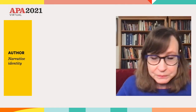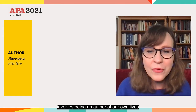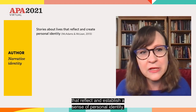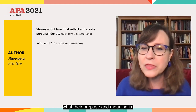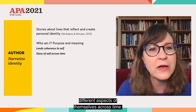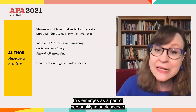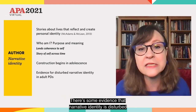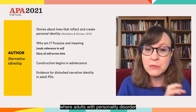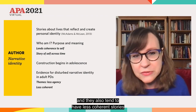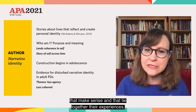So now on to the last layer of personality — narrative identity — which emerges in adolescence. This is the idea that part of our personality involves being an author of our own lives, creating stories about our lives that reflect and establish a sense of personal identity. As adolescents try to understand who they are and what their purpose and meaning is, they develop stories that give them a sense of coherence and tie together different aspects of themselves across time. There's some evidence that narrative identity is disturbed in adult personality disorder, where adults often describe the stories of their lives with less agency, less sense of control, and less coherent stories.